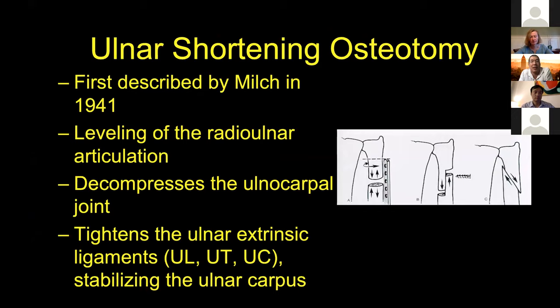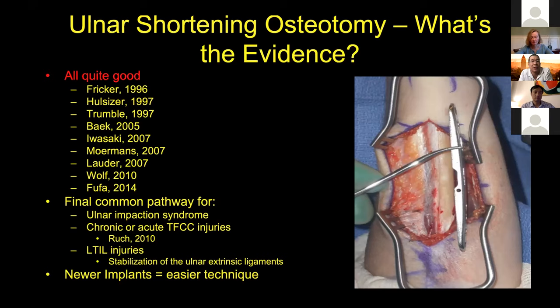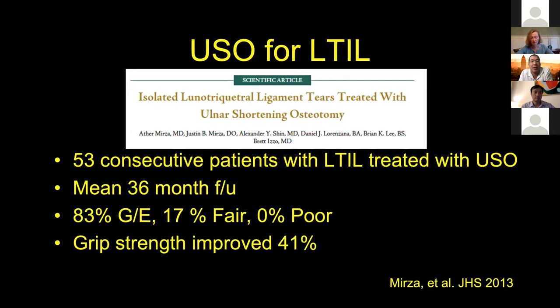Ulnar shortening osteotomy is my treatment of choice for chronic LT ligament injury. First described by Milch in 1941 for leveling the distal ulnar articulation in ulnar impaction patients — decompressing the ulnar carpal joint — the secondary benefit is that it tightens the ulnar extrinsic ligaments: ulnolunate, ulnotriquetral, and ulnocapitate ligaments, thereby helping to stabilize the ulnar carpus and restoring LT stability. It's the final common pathway for ulnar impaction syndrome, chronic or even acute TFCC injuries, and for LT ligament injuries. A paper by Atamirza showed 53 patients treated with ulnar shortening osteotomy for chronic LTIL with quite good results.